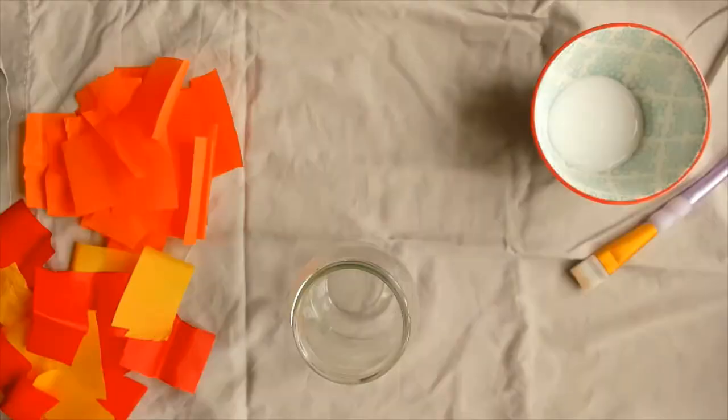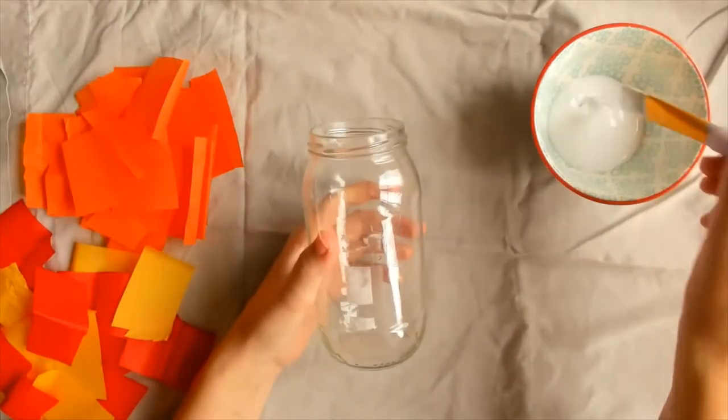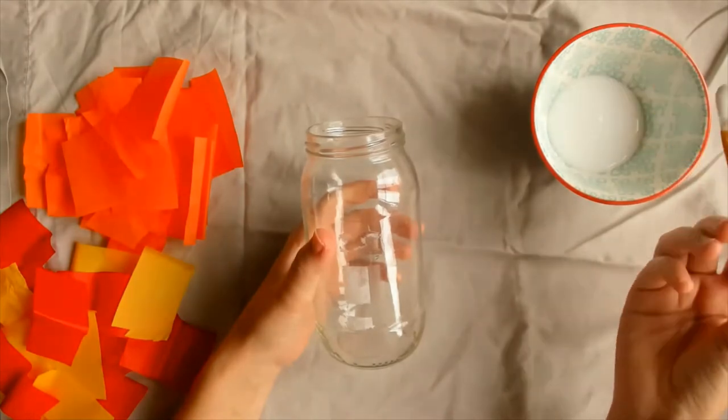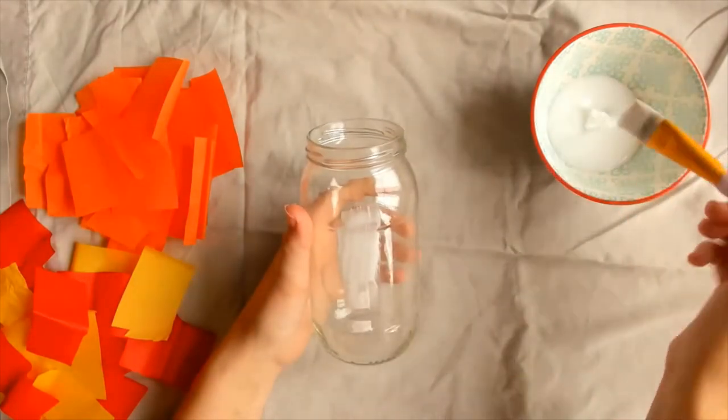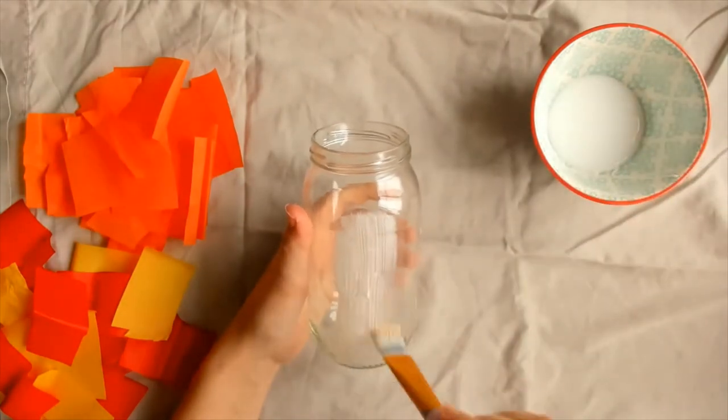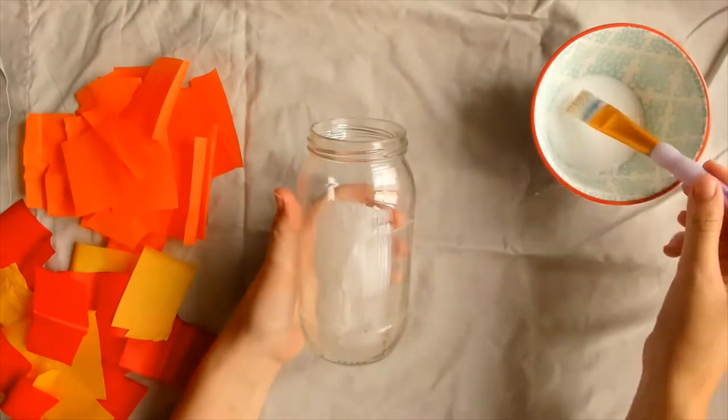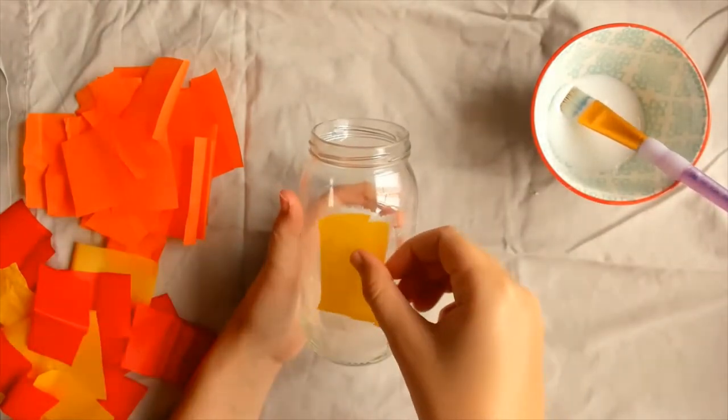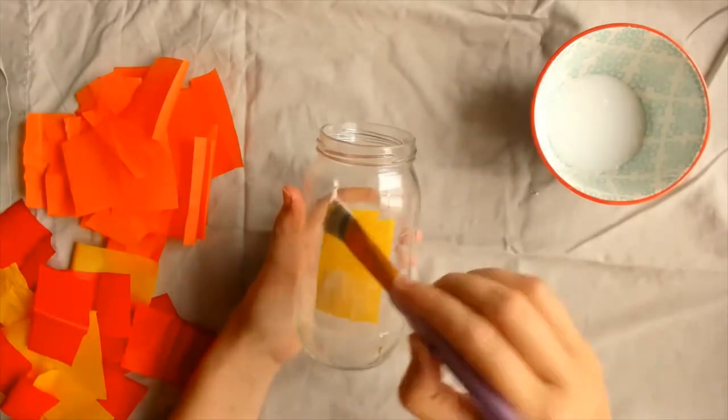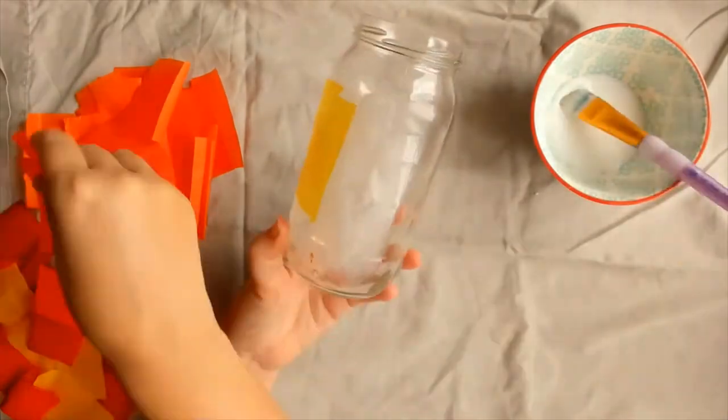First of all, we're going to take our glass jar or mason jar and cover it in orange tissue paper. This is where you can choose to use a mixture of warm autumn colors if you want. Make sure to put glue under your tissue paper and over the top to flatten it down, but it doesn't need to be dripping wet. Once covered, leave to dry overnight.